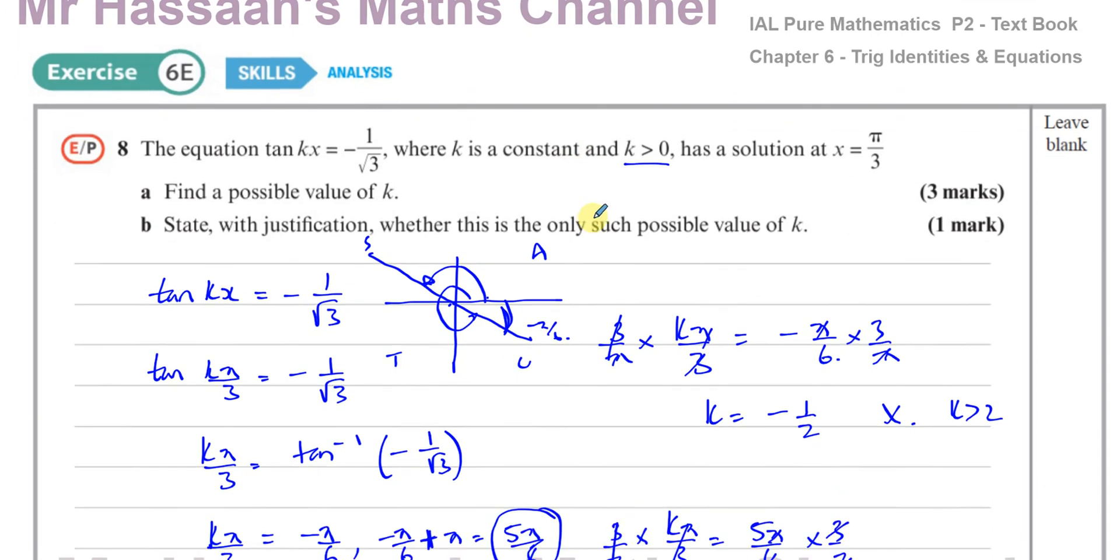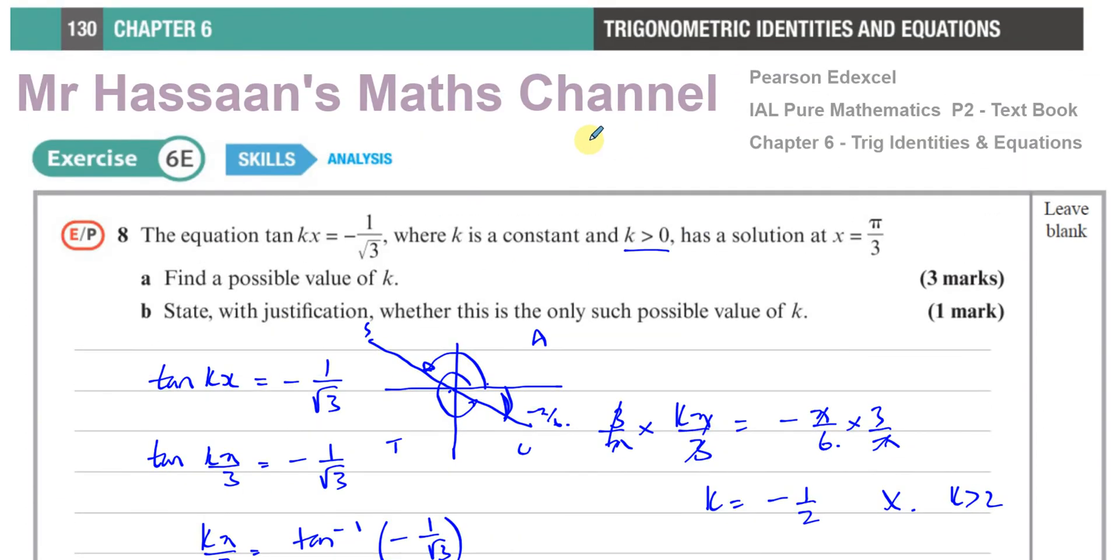So there we have the answer to question part A and B. I hope that was clear. Other questions from this particular chapter, exercise 6E from the textbook, when I am requested to make a video on them, will be collected together in the playlist that should appear in this region. Other questions from this topic of trigonometry from P2 in general can be found in the playlist that will appear over here. You can subscribe to my channel by clicking on this link. Don't forget to get the index from the description. Thank you for watching and see you soon.